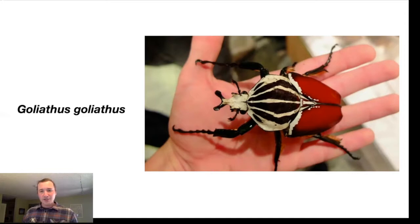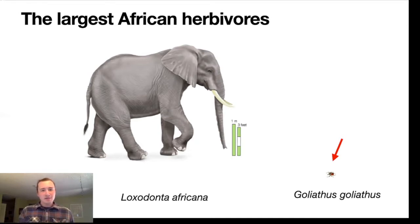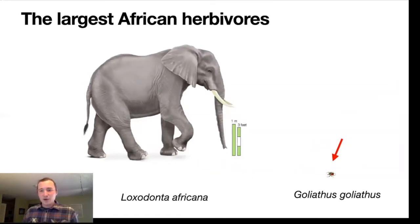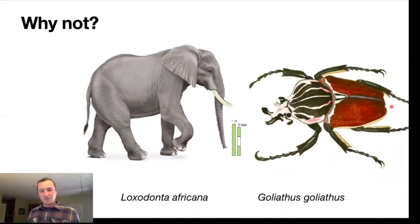Despite how large this insect may seem, it still fits in the palm of your hand. Compared to another large herbivore, it's actually quite small. The topic we're exploring is why there is this huge discrepancy between the largest mammalian herbivore in the African savannah and the largest insect herbivore. Why don't we see huge towering goliath beetles roaming the African savannah being hunted by prides of lions?